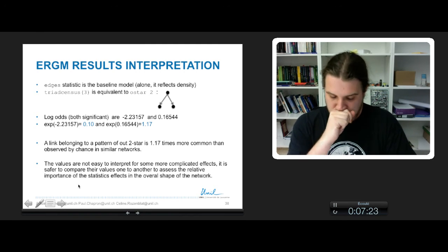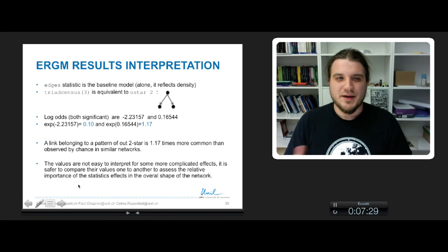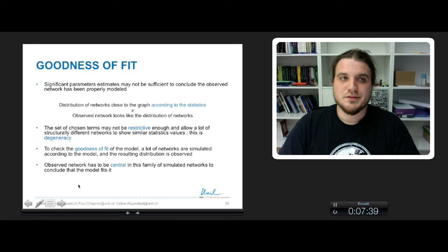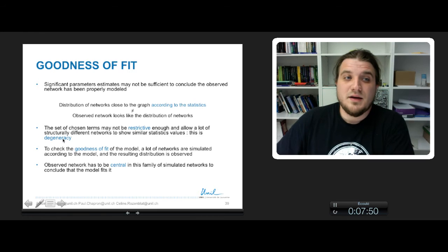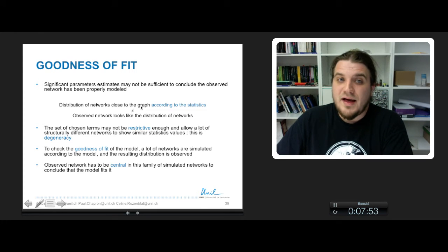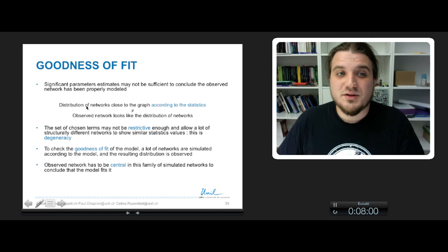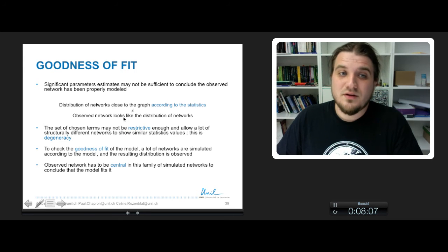That's it for interpretation. Just remember to compare the values to one another, instead of trying to transform it into a probability of observing a link, which is more tricky. So we have parameter values, but we are not sure that this is sufficient to conclude that the observed network has been properly modeled. Having a distribution of networks close to the graph according to some statistics is not the same thing as having an observed network that really looks like the distribution of networks that we have with our model.